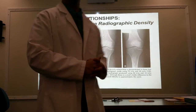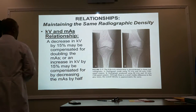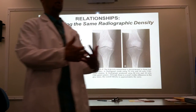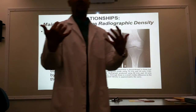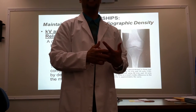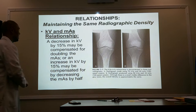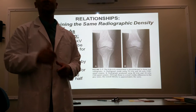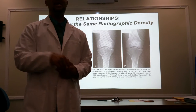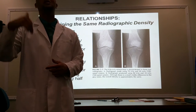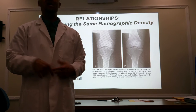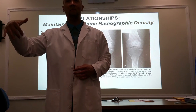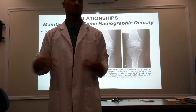Now we need to take our tools and learn how to work with them as a whole. We're going to be talking about the KV and MAS relationship and its effect on overall density. We already know that if you increase or decrease your KV by 15%, you're doubling your density or cutting it in half. The same goes with MAS — if you double it or cut it in half, you're also doubling or cutting your density in half.